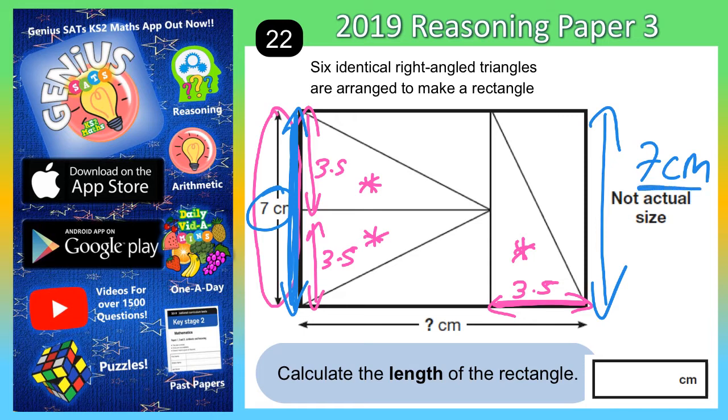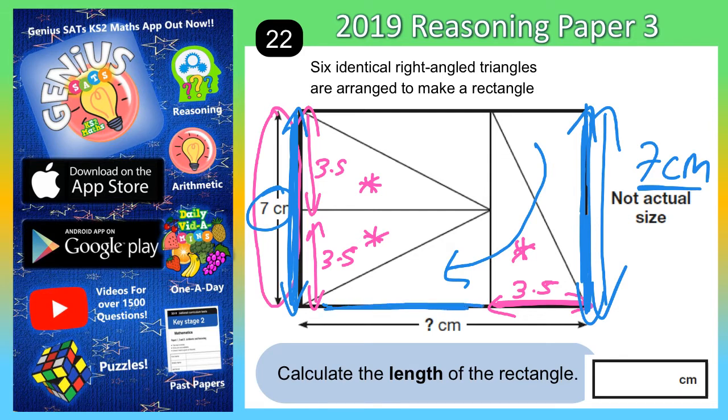Now, once you know it's 7 centimetres down this side, that's this distance here. But this is the upright distance of this triangle. Now, if you were to rotate that triangle round and fit it down here, that 7 centimetres would end up along the bottom there. So, that distance is 7 centimetres.